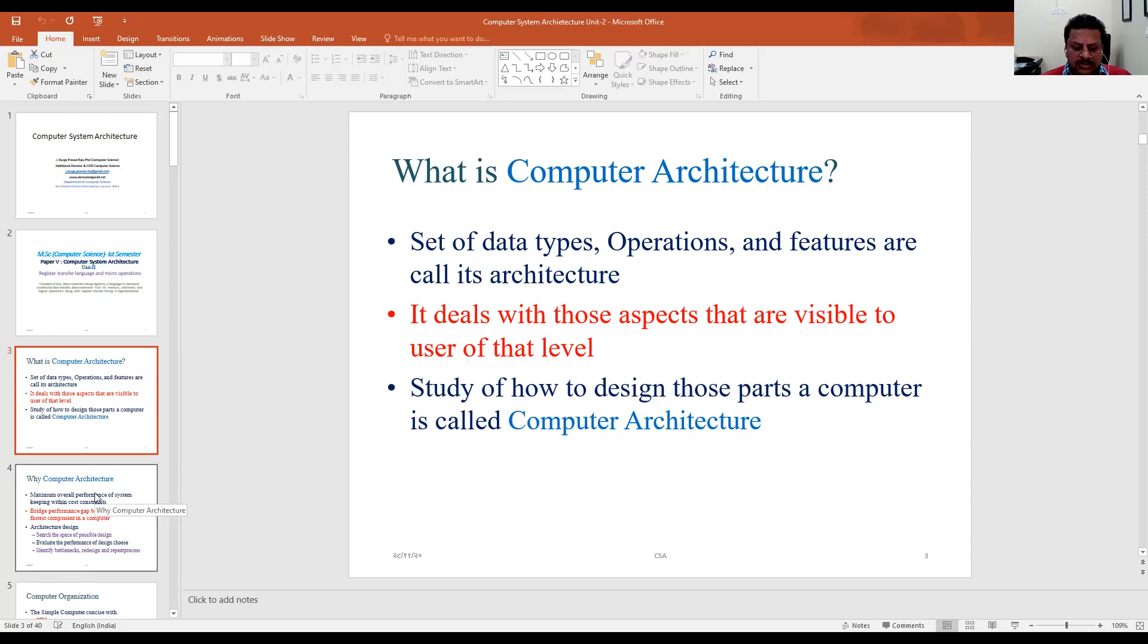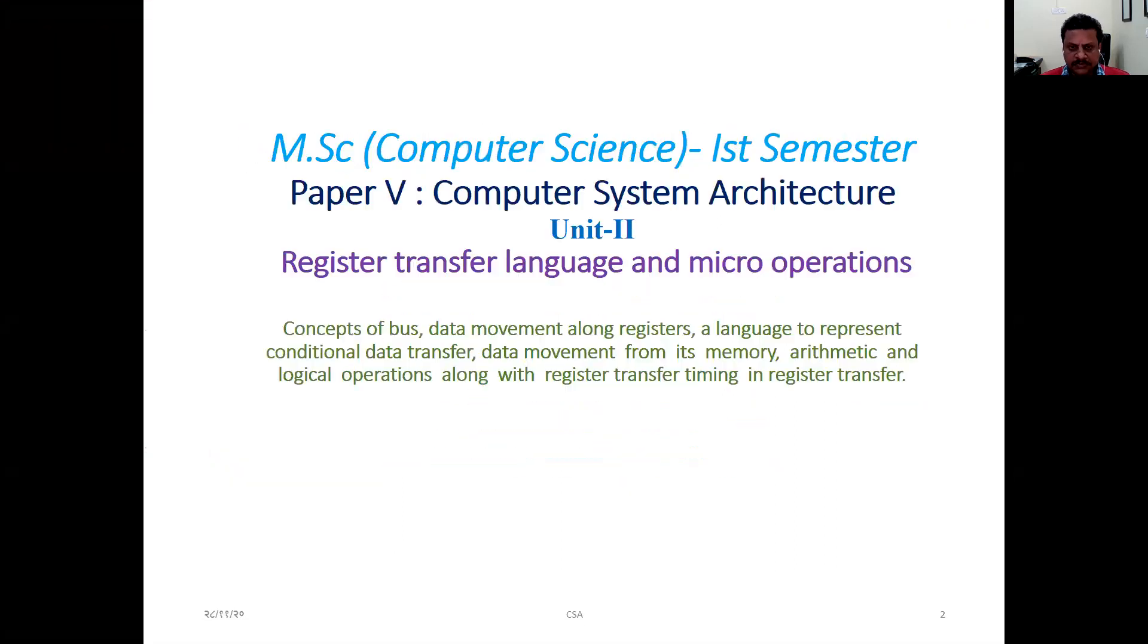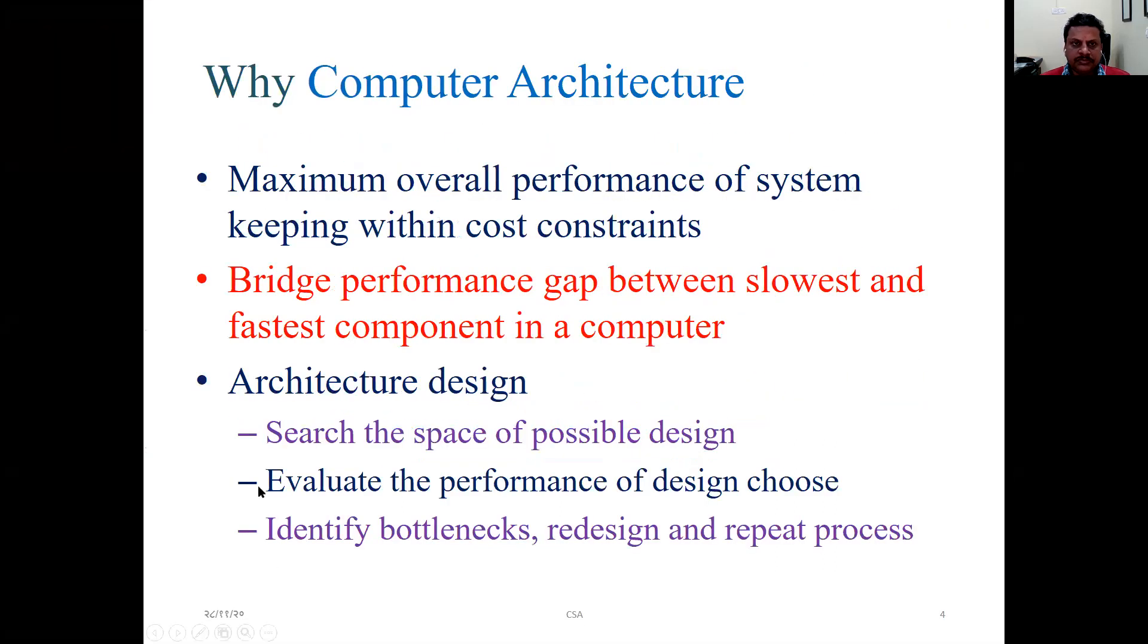So let's now see why Computer Architecture is needed. The reasons basically for Computer Architecture are to analyze or check maximum overall performance of a system keeping with its constraints. It is also used to bridge the performance gap between the slowest and fastest component in a computer. Also to study architecture design, search the space of possible designs, evaluate the performance of design chosen, identify bottlenecks, redesign and repeat process.